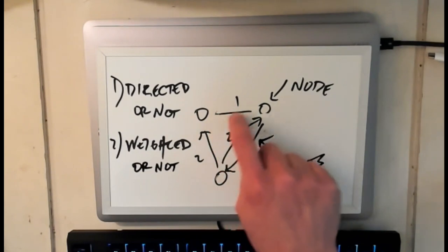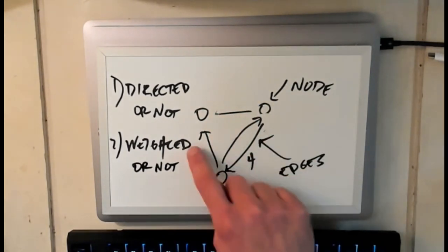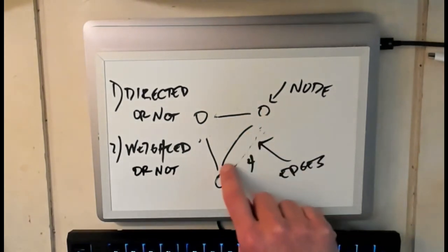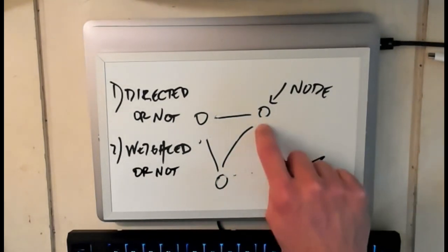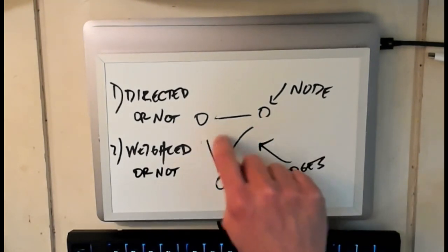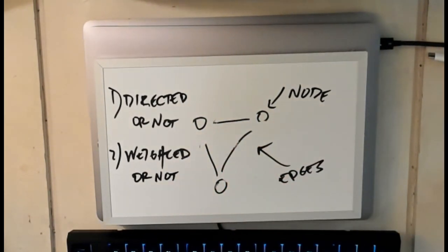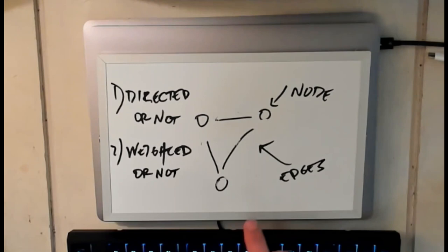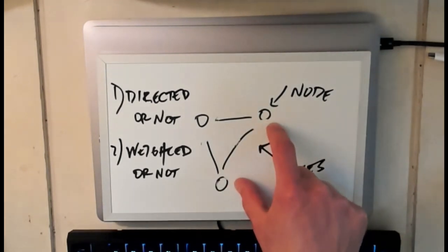Typically what we'll focus on is the simplest case where I take the weights out, I take the directionality out, and all I do is I model nodes and edges. So nodes connected by or not connected by a single edge. This graph still has a lot of interesting things that we can do with it.